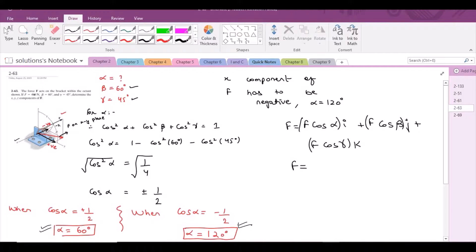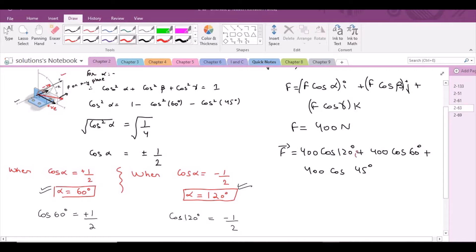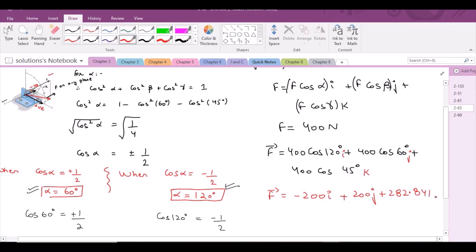We know that F is 400 newtons. From here, F becomes 400 cos(120°) i + 400 cos(60°) j + 400 cos(45°) k. So F = -200 i + 200 j + 282.84 k. This is it for this problem.